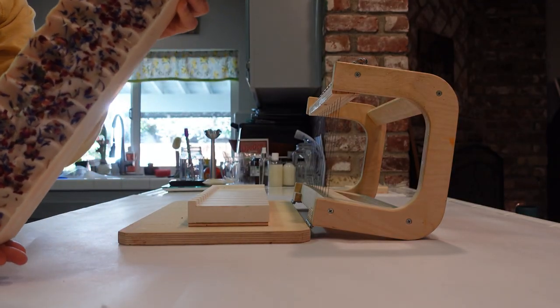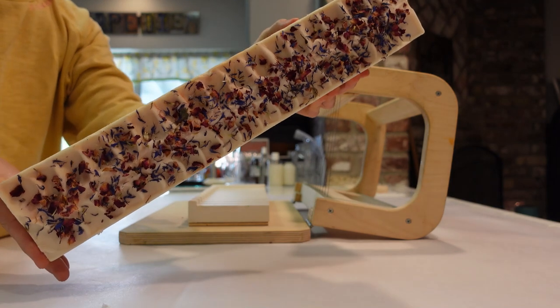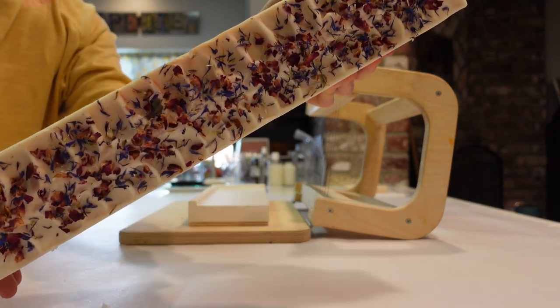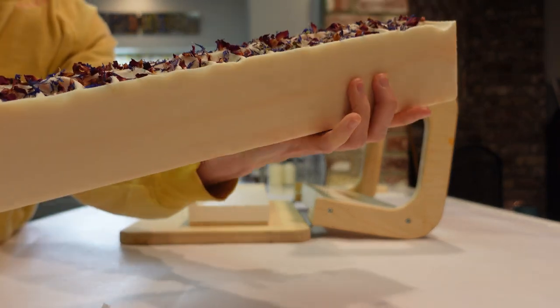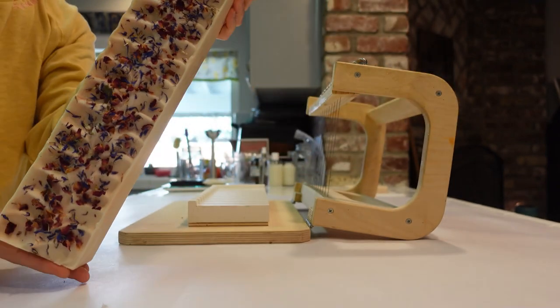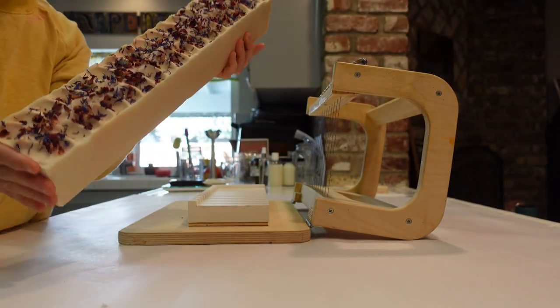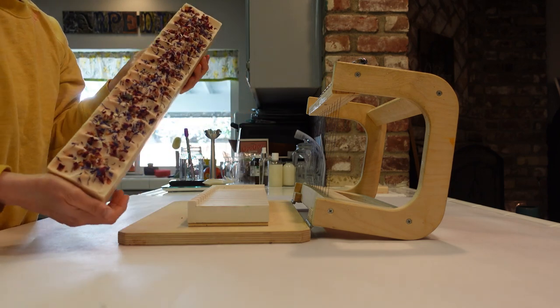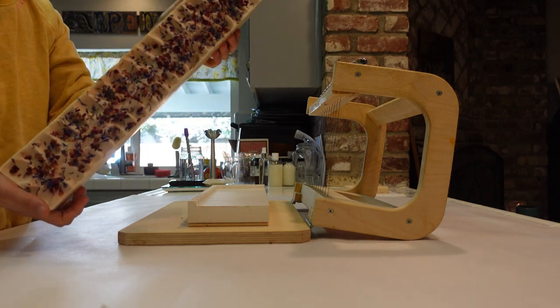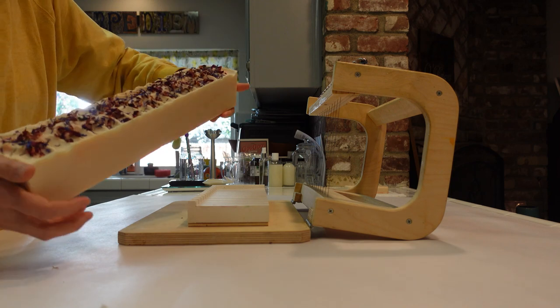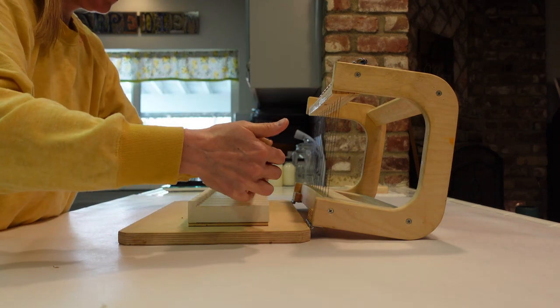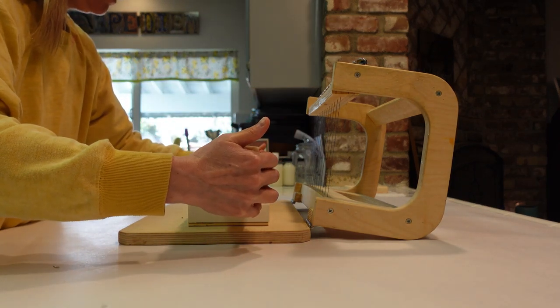All right, we are back to go ahead and cut this beautiful goat milk cold processed soap. I just love how the color turned out. Let's cut this open and see what the swirl looks like. So as a rule of thumb when you're using botanicals on your soap, you want to make sure that you flip the botanical side this way towards the front of your cutter.